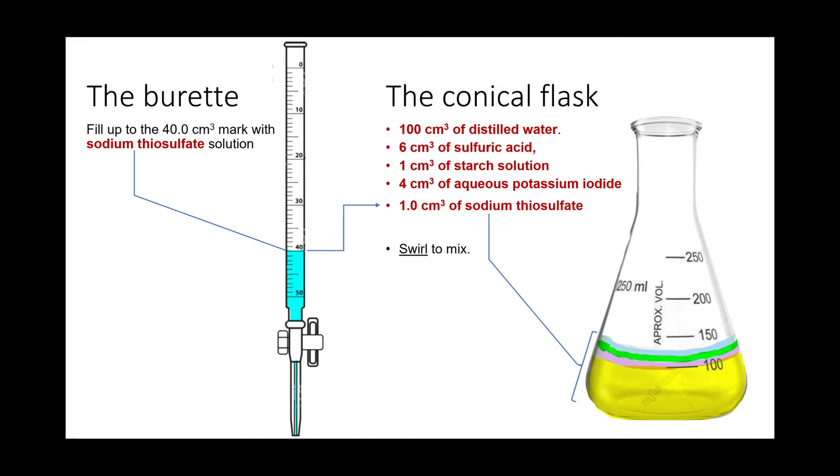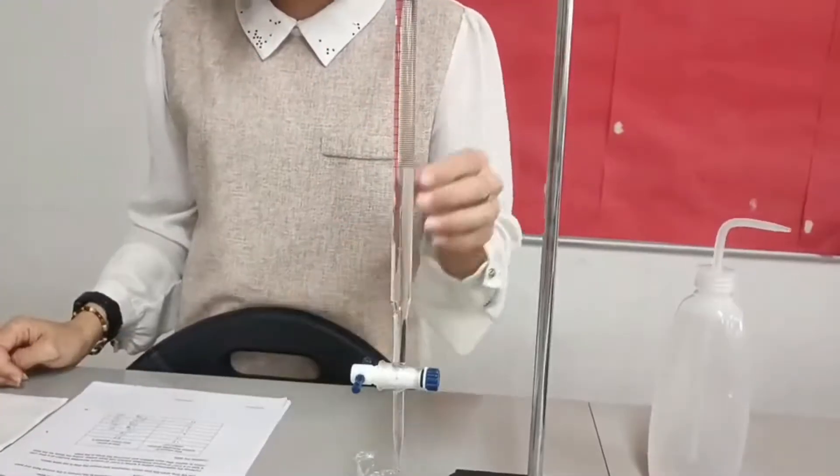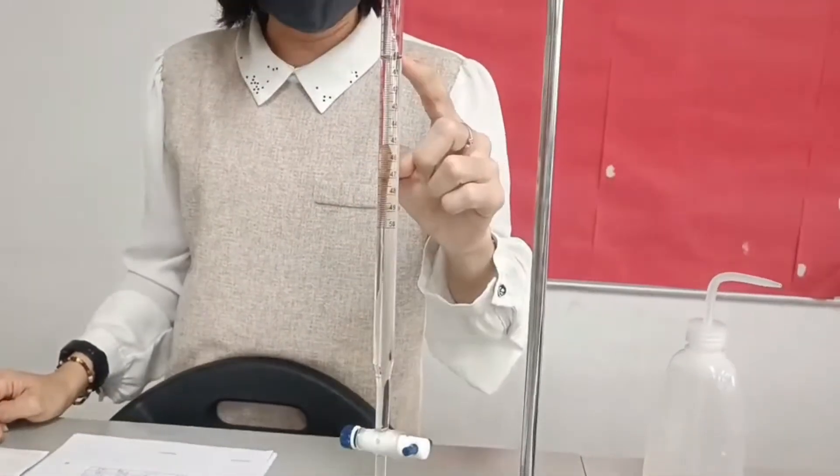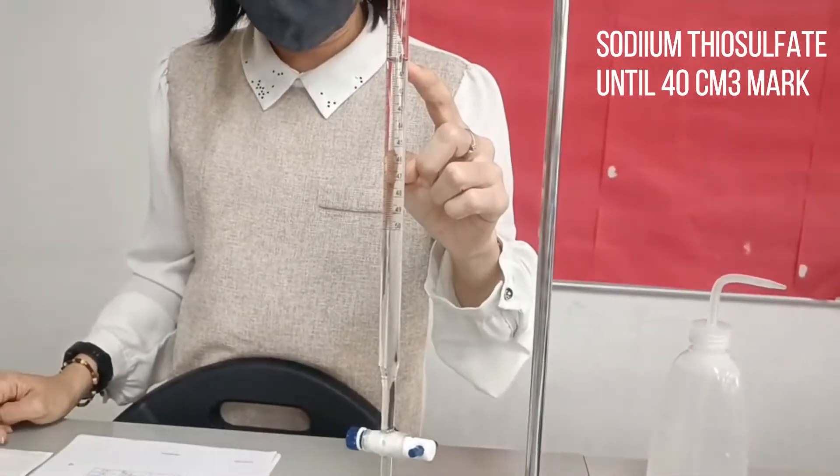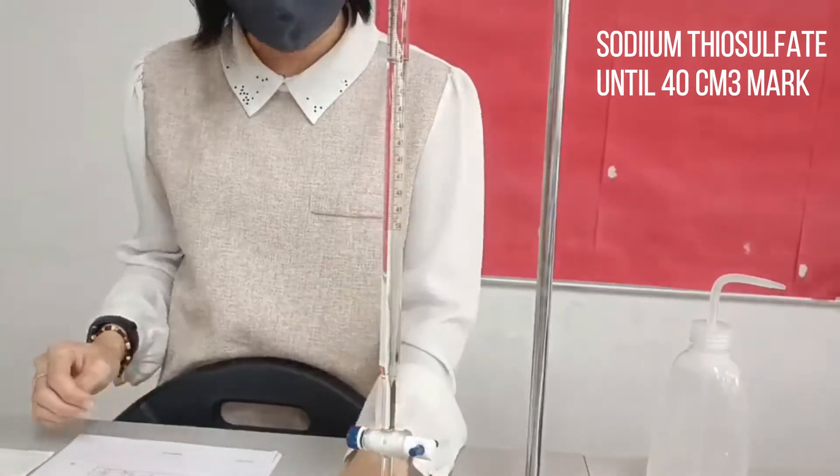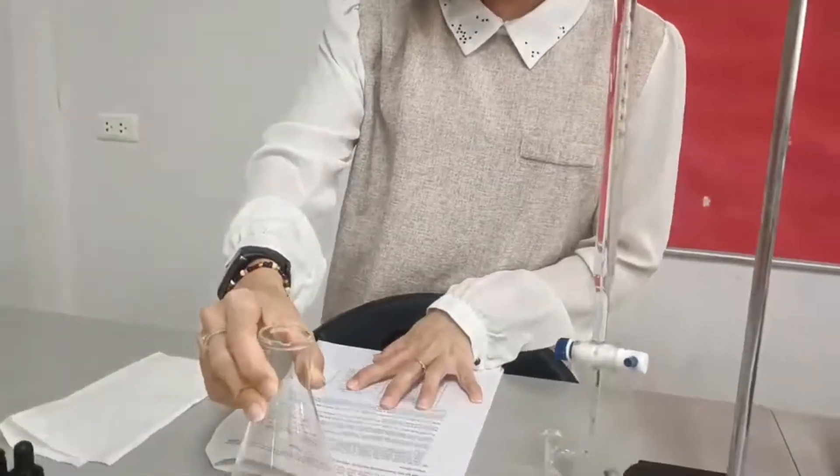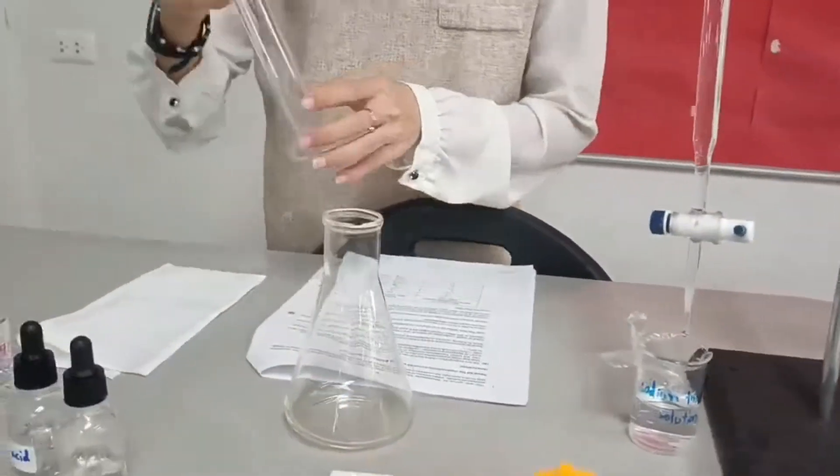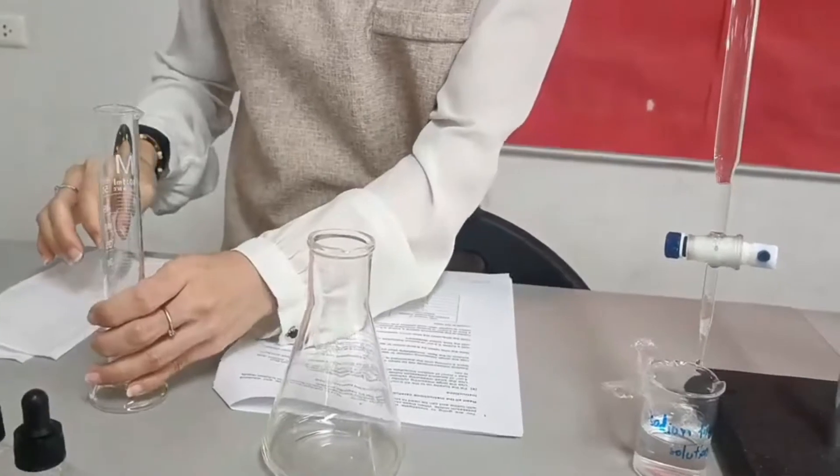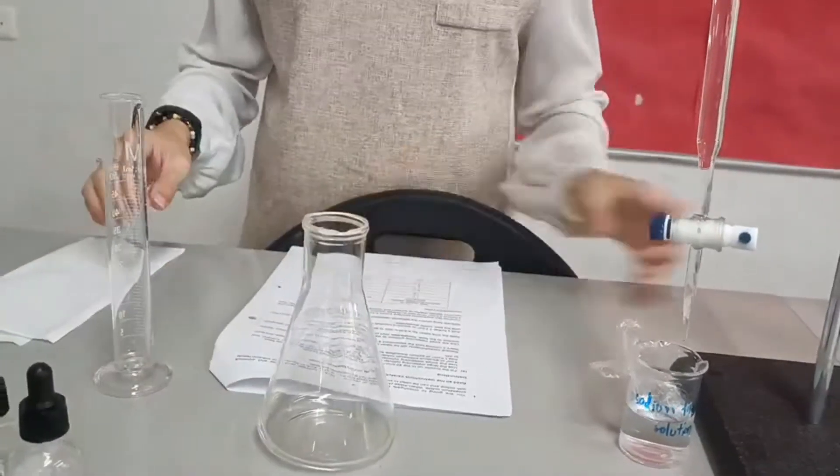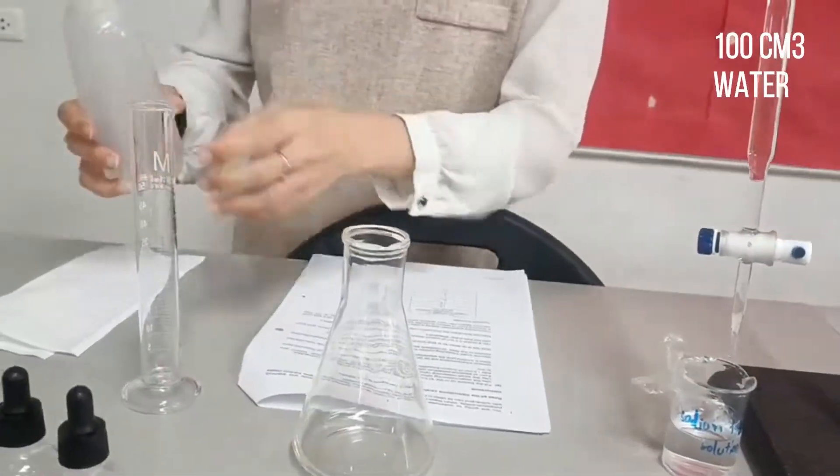The timer needs to run throughout the experiment. I have filled the burette until the 40 cm³ mark with sodium thiosulfate, and now I'm going to prepare the solutions that go in the conical flask. So, here I need 100 ml of distilled water.